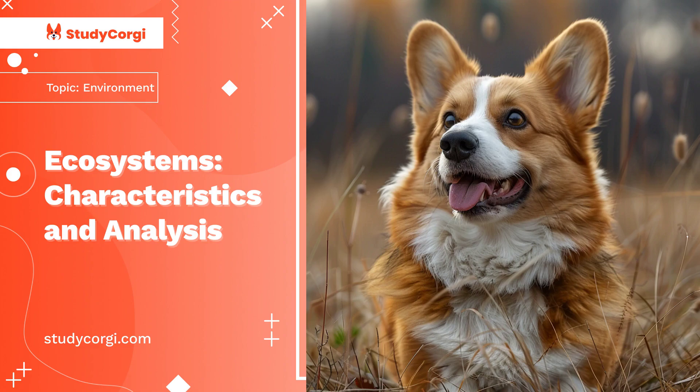The abiotic components consist of climate or climatic factors such as temperature, light, moisture, precipitation, gases, wind, water, soil, salinity, substrate, mineral, topography, and habitat.